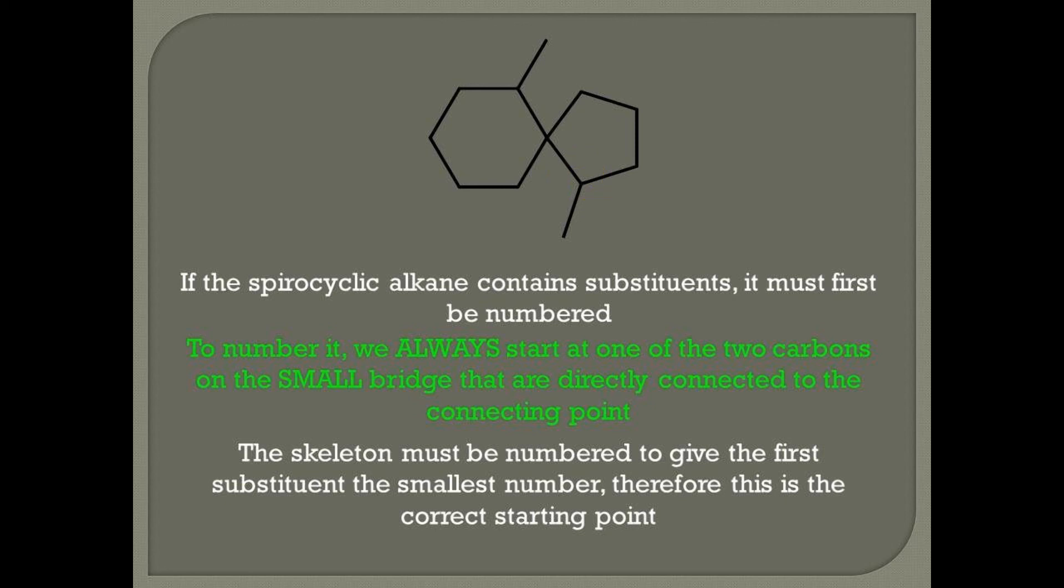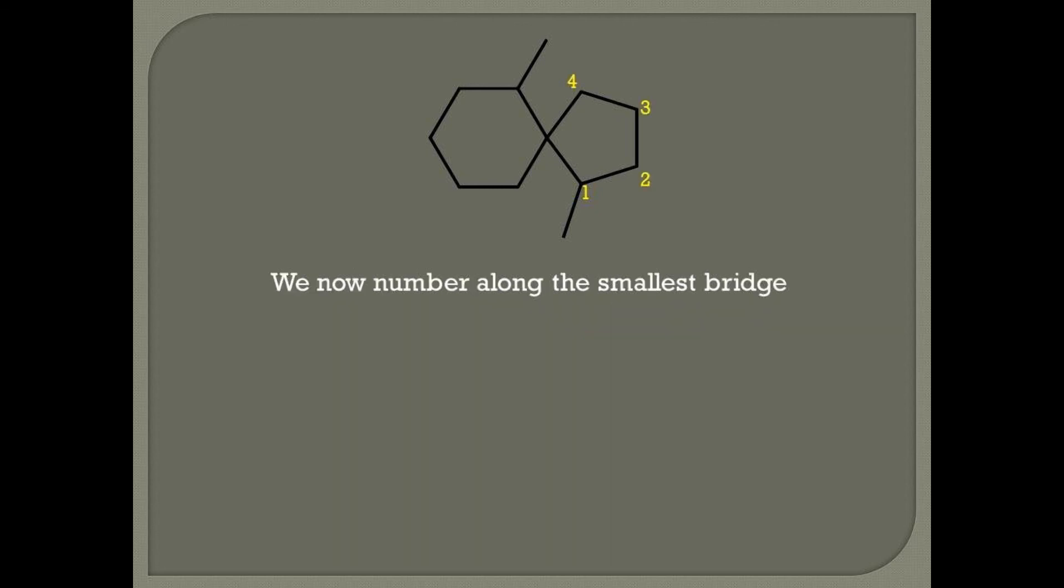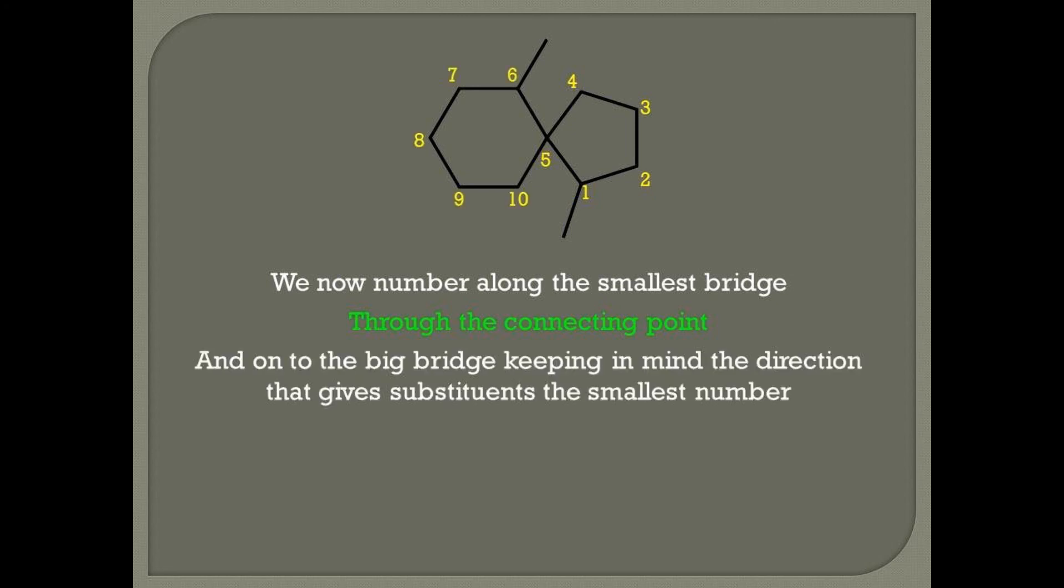So let's number it around the small bridge. One, two, three, four. And now we go to the connecting point, five. From the connecting point, we go on the bigger bridge. And now, again, we have to give the substituents the smallest number. So we start from the top and we go around. Six, seven, eight, nine, ten.